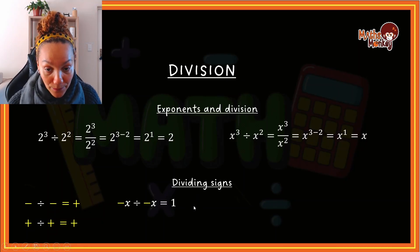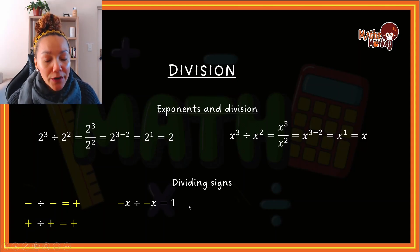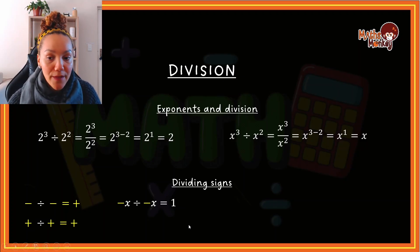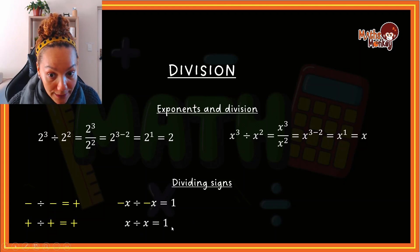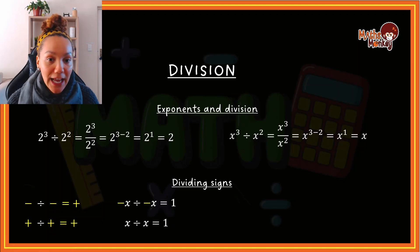So this will essentially be positive one. If you don't understand that, just rewind and play this section over until you get it. Positive x divided by x will give you positive one. Anything divided by itself is actually one.